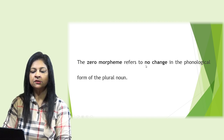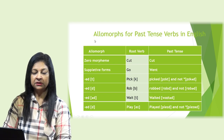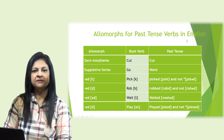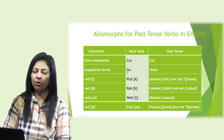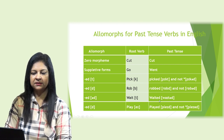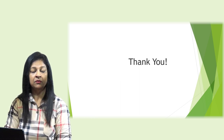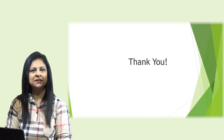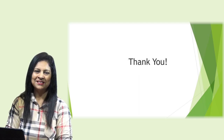The zero morpheme refers to no change in the phonological form of the plural noun. Looking at the table of allomorphs for past tense verbs in English: the zero morpheme — cut stays cut. Suppletive forms — go becomes went. The -ed allomorph gives: picked, robbed, waited, played. I hope you now have some knowledge about the structure of words. It's better if you can read this content to get more knowledge. Hope you enjoy the lessons — thank you.